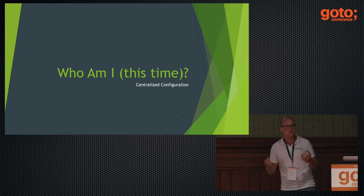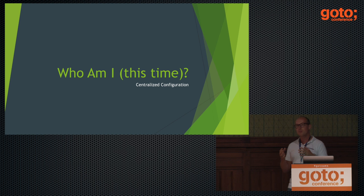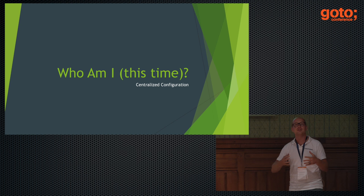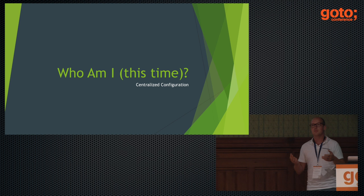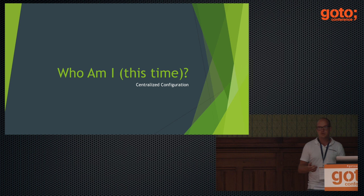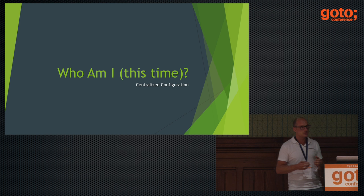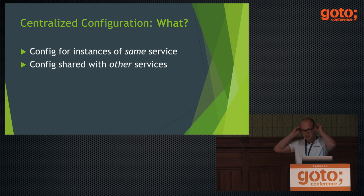To start with that first question — who am I this time — what we're really talking about is centralized configuration. Every application, whether a micro service or a big monolith, needs some form of configuration at startup. If you've been working with Spring for a while, the traditional approach has been a properties file on your classpath or next to your application on the file system. When we're talking about distributed systems with multiple instances of applications running, in many cases you'll want something different.